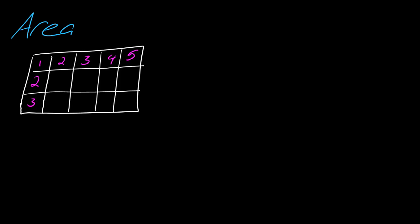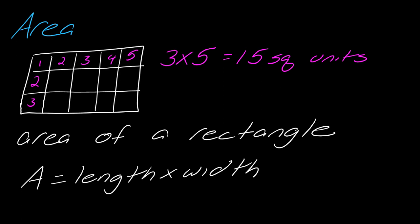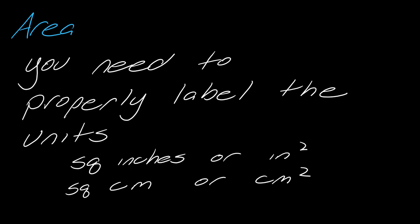Now let's pivot to area. Here is a rectangle. The idea with area is to divide the rectangle into equal-sized squares and count how many fit. With three squares one way and five squares the other way, area is three times five equals 15 square units. The area of a rectangle in general is length times width, abbreviated L times W. Make sure to properly label the units — square inches, square feet, inches squared, or feet squared.